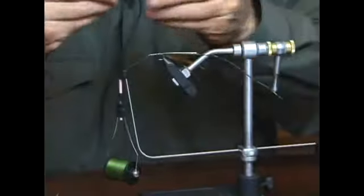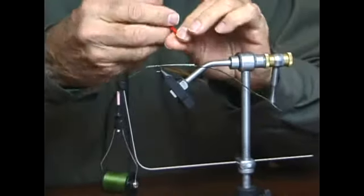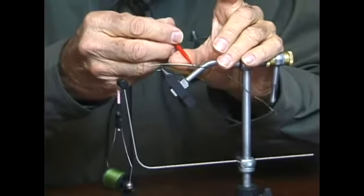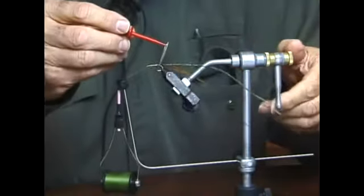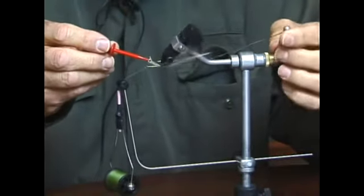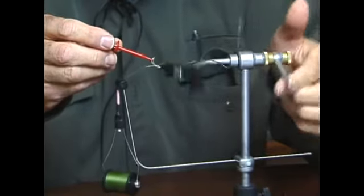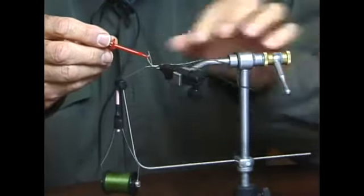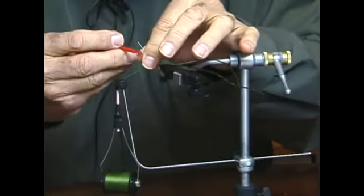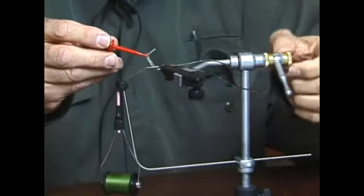I'm going to pick up my hackle plier and grab the body material, which was the five sections from a turkey round. Using the actuator arm and the rotator vise, I'm going to move the feather fibers forward, building the fly body.